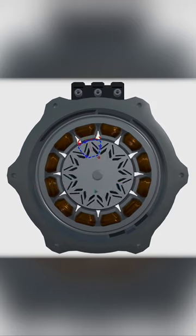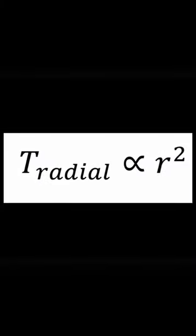The torque in the radial flux machine is proportional to the second power of the machine diameter. In the axial flux machine, it is proportional to the third power of the diameter.